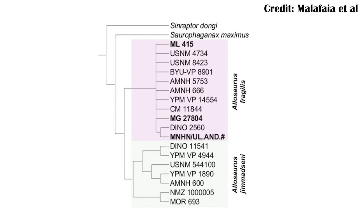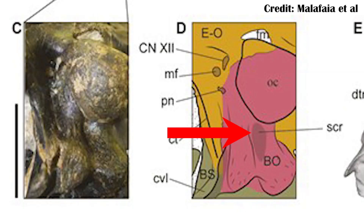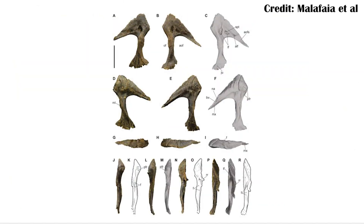This is based on a few different traits: the maxilla having two rows of foramina for nutrients, the bottom of the jugal bone being convex behind and below the eye, the size of a depression on the basioccipital bone, and the tall triangular lacrimal horn.